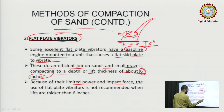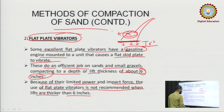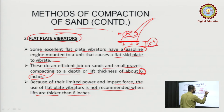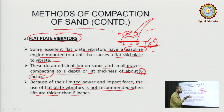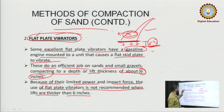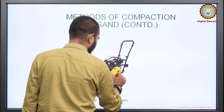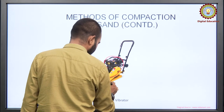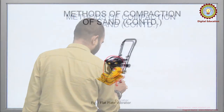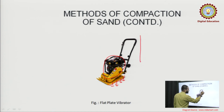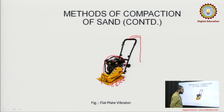Because of their limited power and impact force, the use of flat plate vibrators is not recommended when the lifts are thicker than 6 inches — they are for shallow depth only. As shown in the diagram, the gasoline machine is attached to the plate, the plate vibrates, and a person operates it by hand. This compacts the sand.